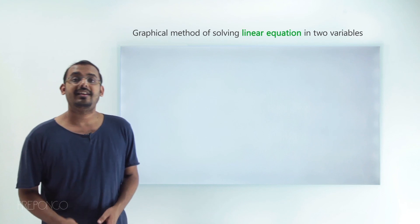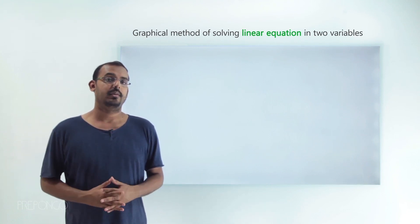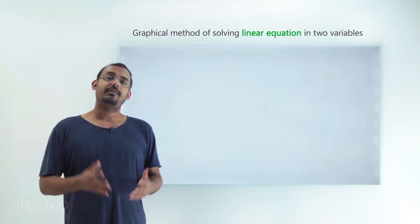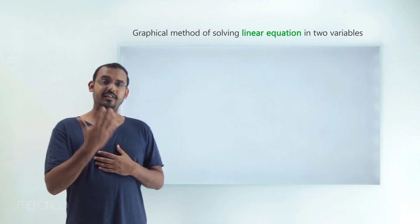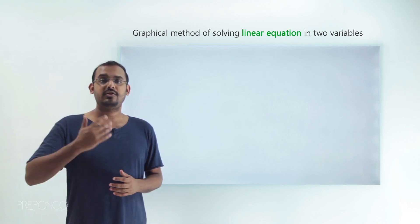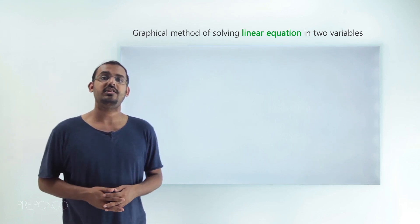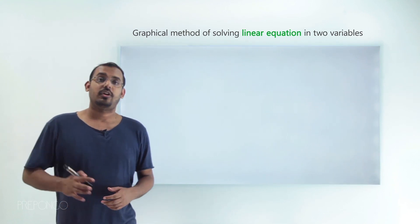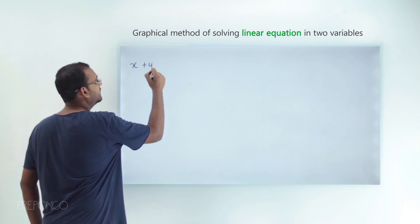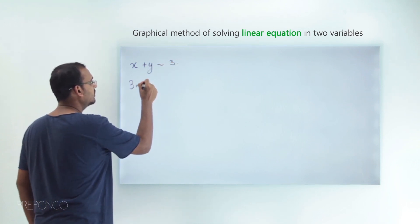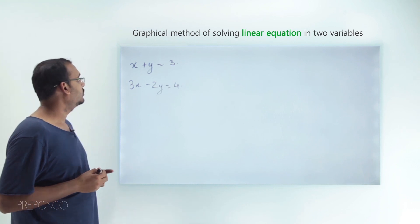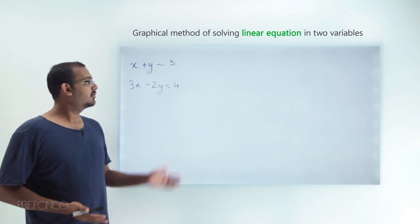For now let's move on and study the graphical method of solving a pair of linear equations in two variables. The graphical method basically means we plot the two lines and find a solution by looking at the representation of the pair of linear equations on a graph. So let's go ahead and see how we solve a pair of linear equations using the graphical method. Let's take an example with the equations x + y = 3 and 3x − 2y = 4.